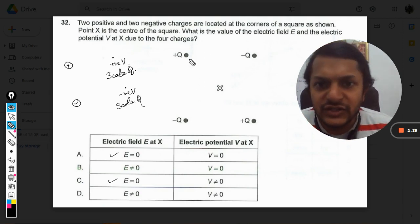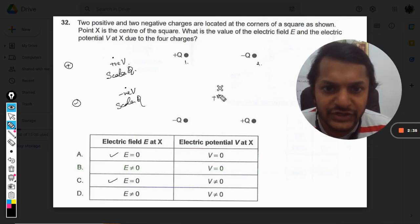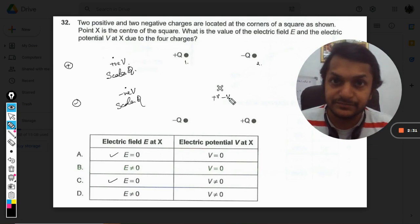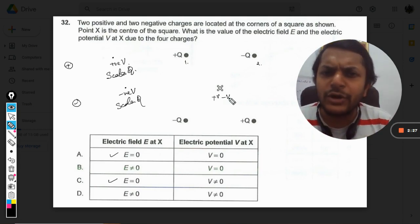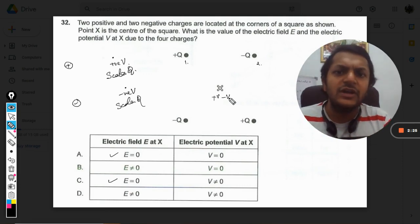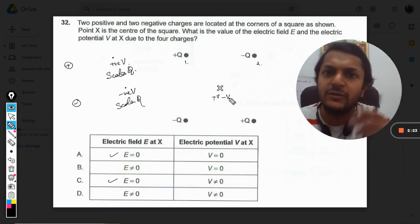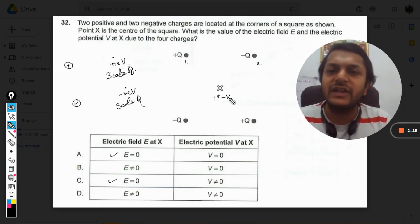Now coming back to our question, this positive charge will be casting a positive potential here, and this negative charge will be casting a negative potential. Now the magnitude of the charge is the same, and because point X is at the center of the square, the distances to be taken in both cases are also the same. So the potential values are the same as far as magnitude is concerned.